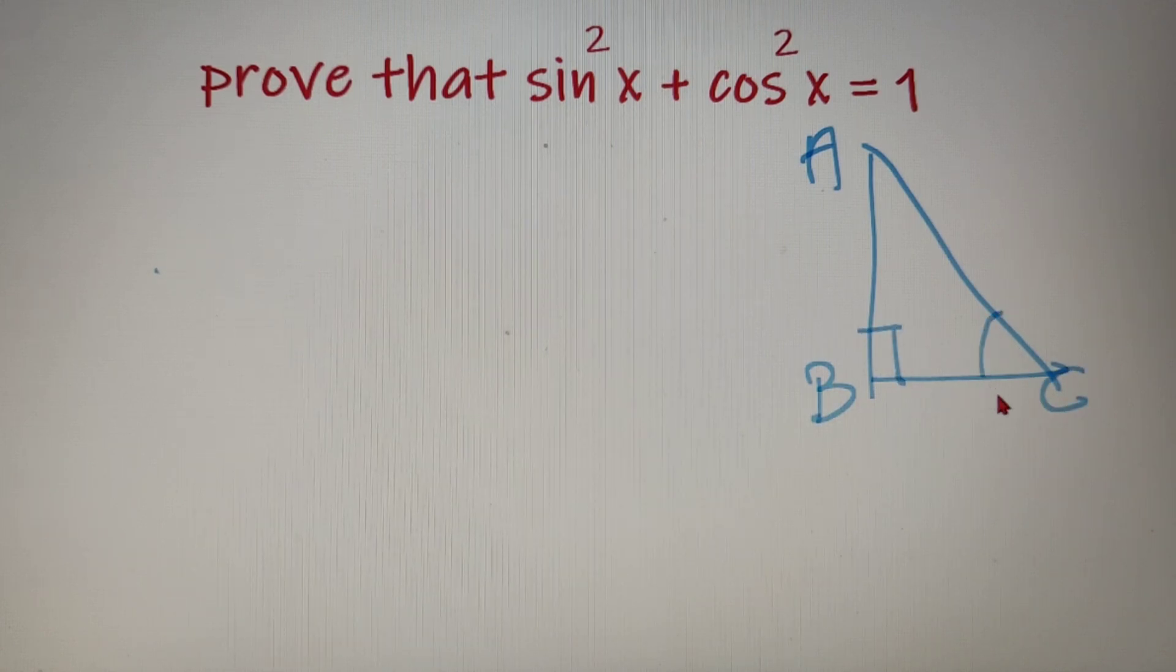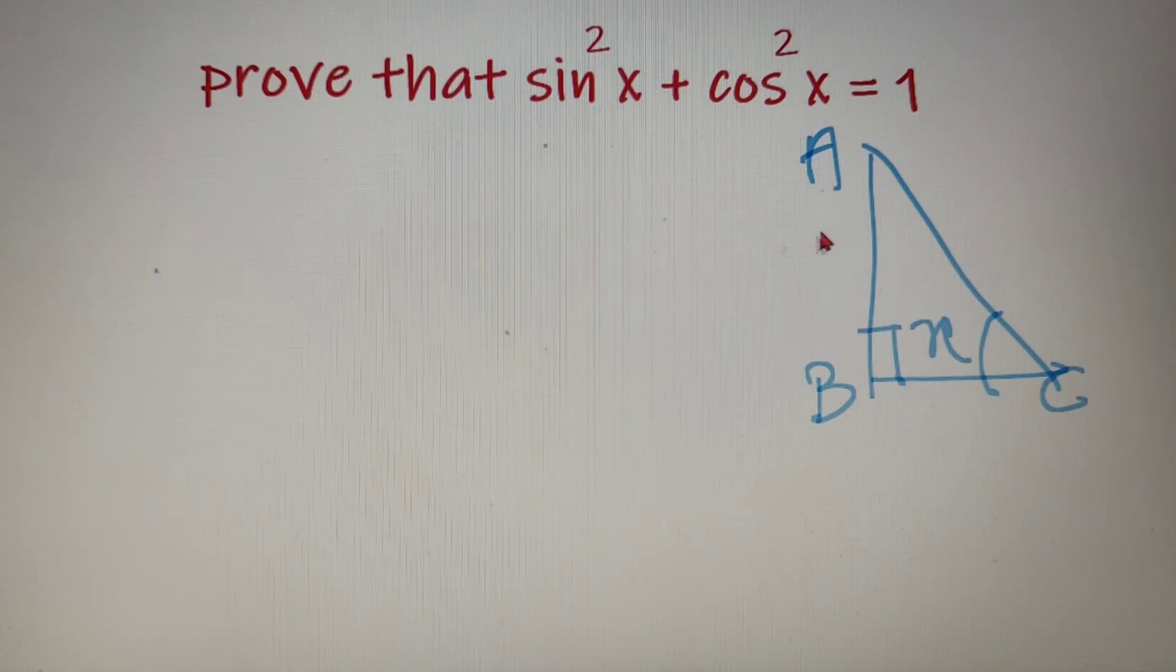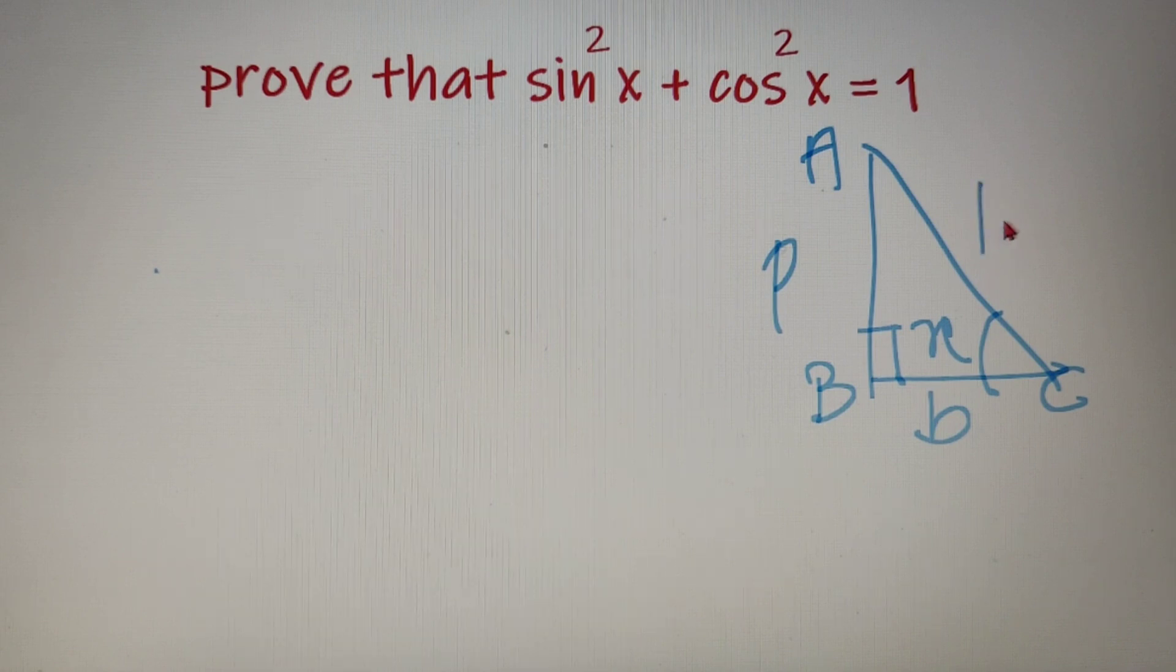Now I can take the angle C as angle x. So I can say that AB is my perpendicular, BC is my base and AC is my hypotenuse.